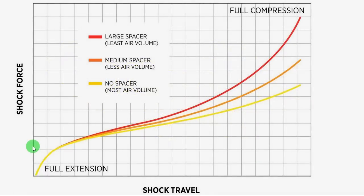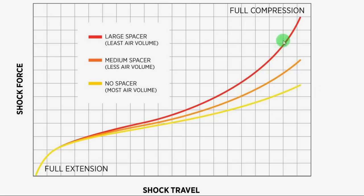In this graph, we have the shock force plotted along the shock stroke or travel. For air shocks, the spring curve is quite progressive — it's an exponential curve. The red line indicates a shock with a small volume, while the yellow line indicates a shock with a bigger volume. Small volume shocks are more progressive than large air volume shocks. The coil shock spring curve is a straight line, quite similar to the yellow line, and it does not ramp up like the low volume air shock.